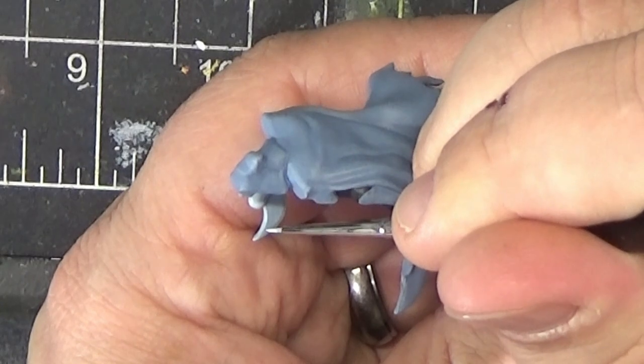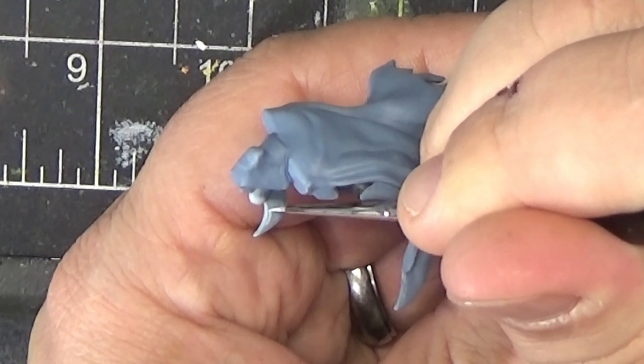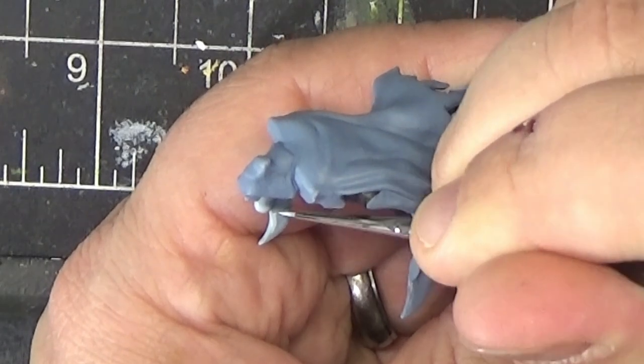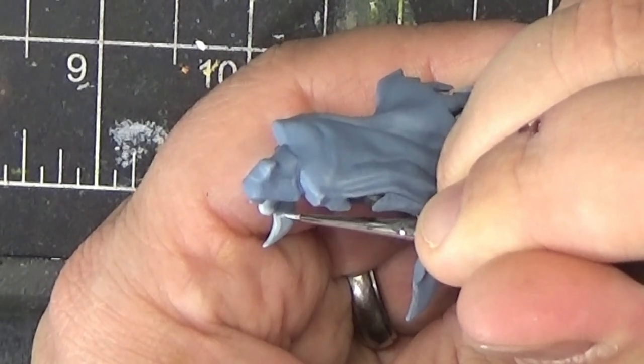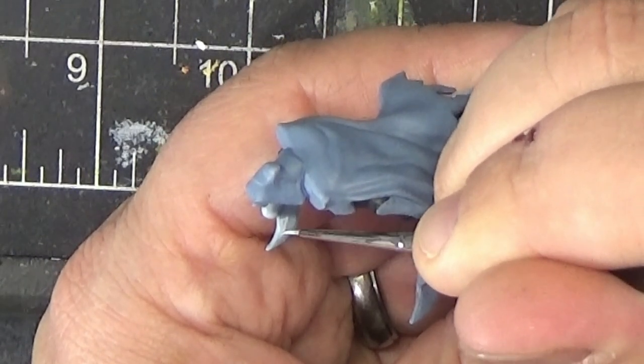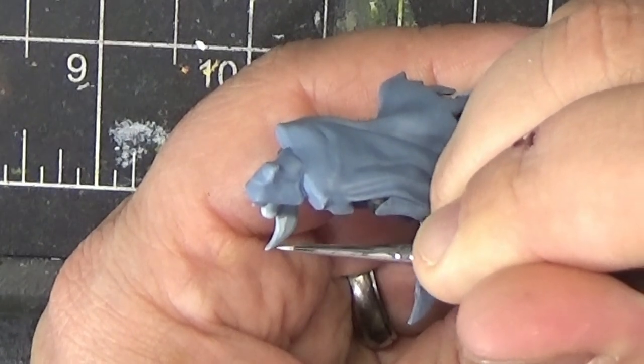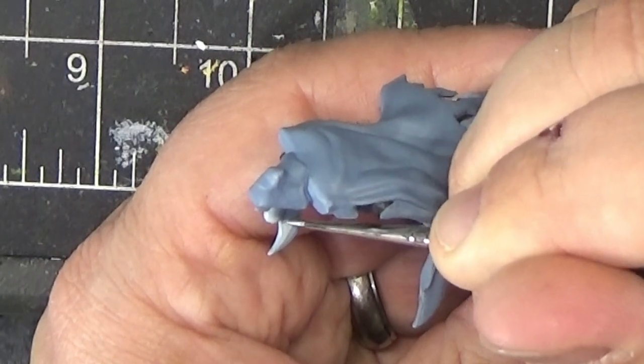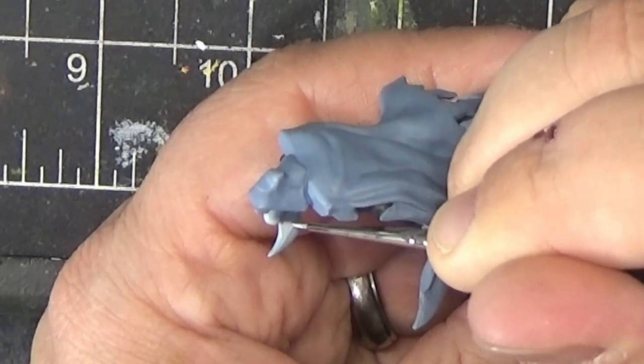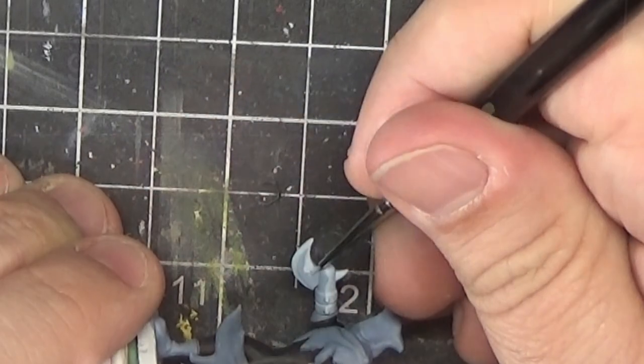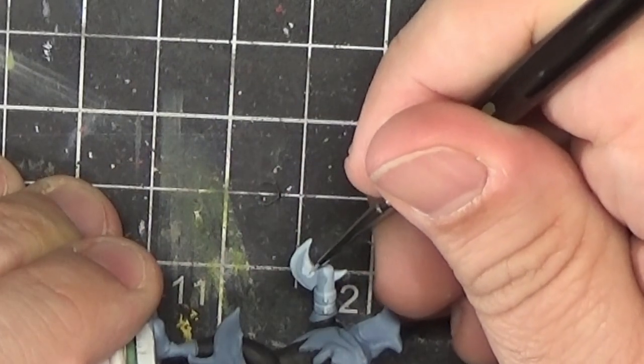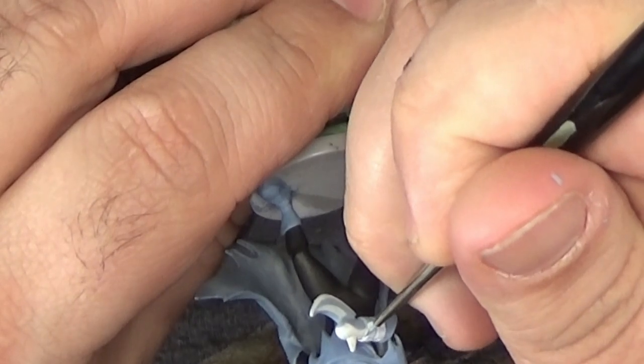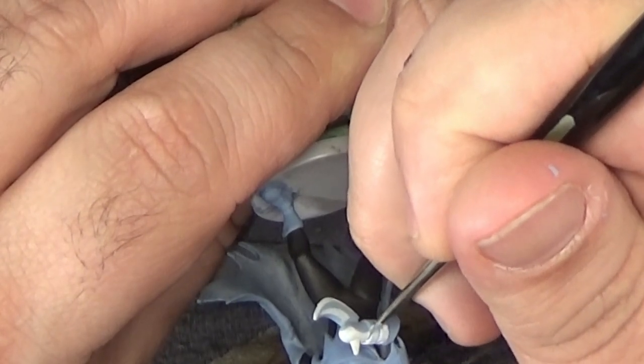Now I'm just repeating that process on the opposite side. Here I'm just outlining the bands on the weapon with the Fenrisian gray.